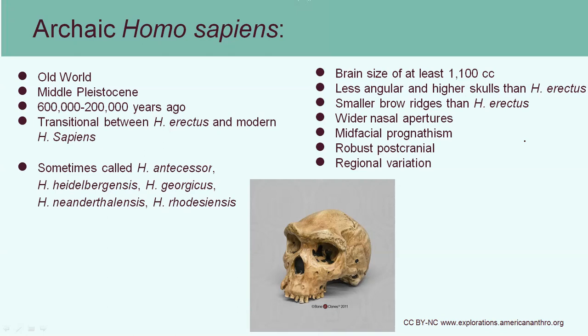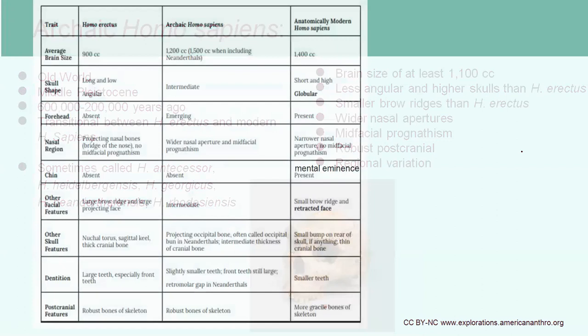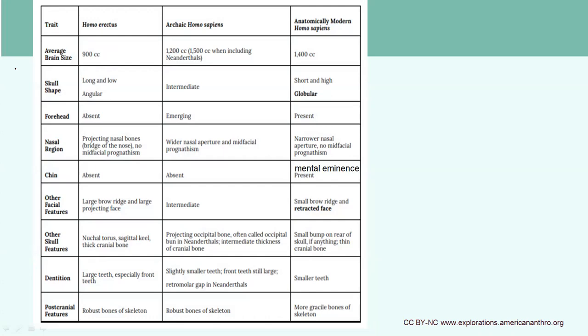This group is going to have quite large brain sizes of at least 1,100 cubic centimeters, much larger skulls, smaller brow ridges than Homo erectus, and less prognathism. Homo erectus had about a 900 cubic centimeter brain size, and now we're looking at well over a thousand. The Neanderthals have the largest cranial capacity of all the fossils we've found at 1,500 cubic centimeters.